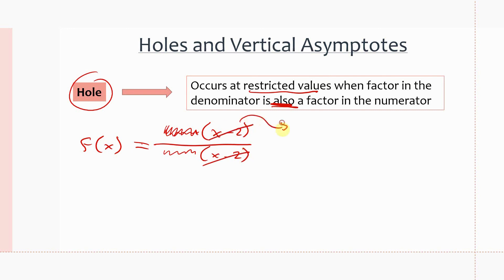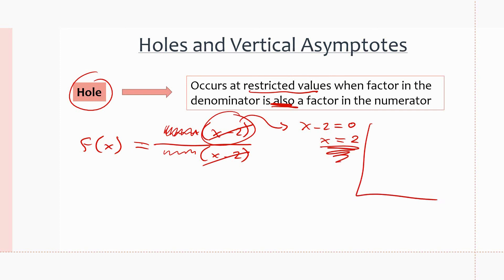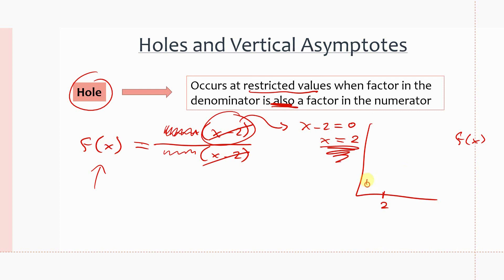So if we have f(x) = [factors] × (x − 2) over [factors] × (x − 2), we can cancel out the (x − 2) from top and bottom. The value x = 2 makes this factor equal to zero, so there will be a hole at x = 2 on the graph. On the graph, at x = 2 there is no y value — it's just an empty space — and we represent this with an open circle to indicate there is a hole at x = 2.